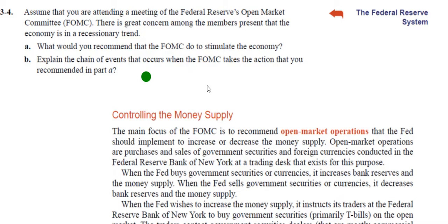Okay, problem 3-4. This is pretty straightforward. The idea here is that the Federal Reserve is going to use the open market to stimulate a slow economy. They're going to put money into the money supply. The vision you would typically get is big trucks rolling up to banks unloading dollars, but that's really not how it works. It works on the open market — it's called Open Market Operations.